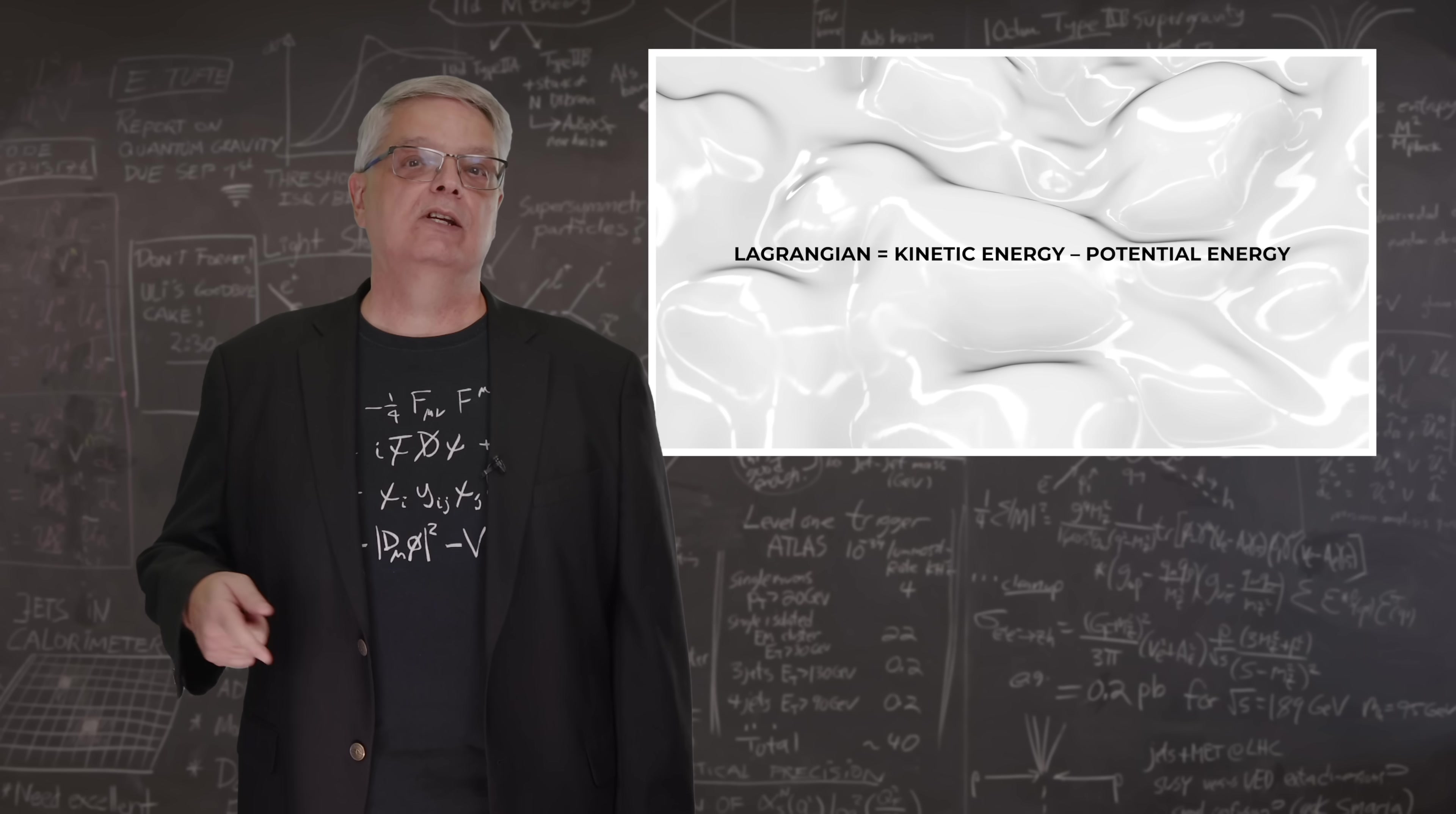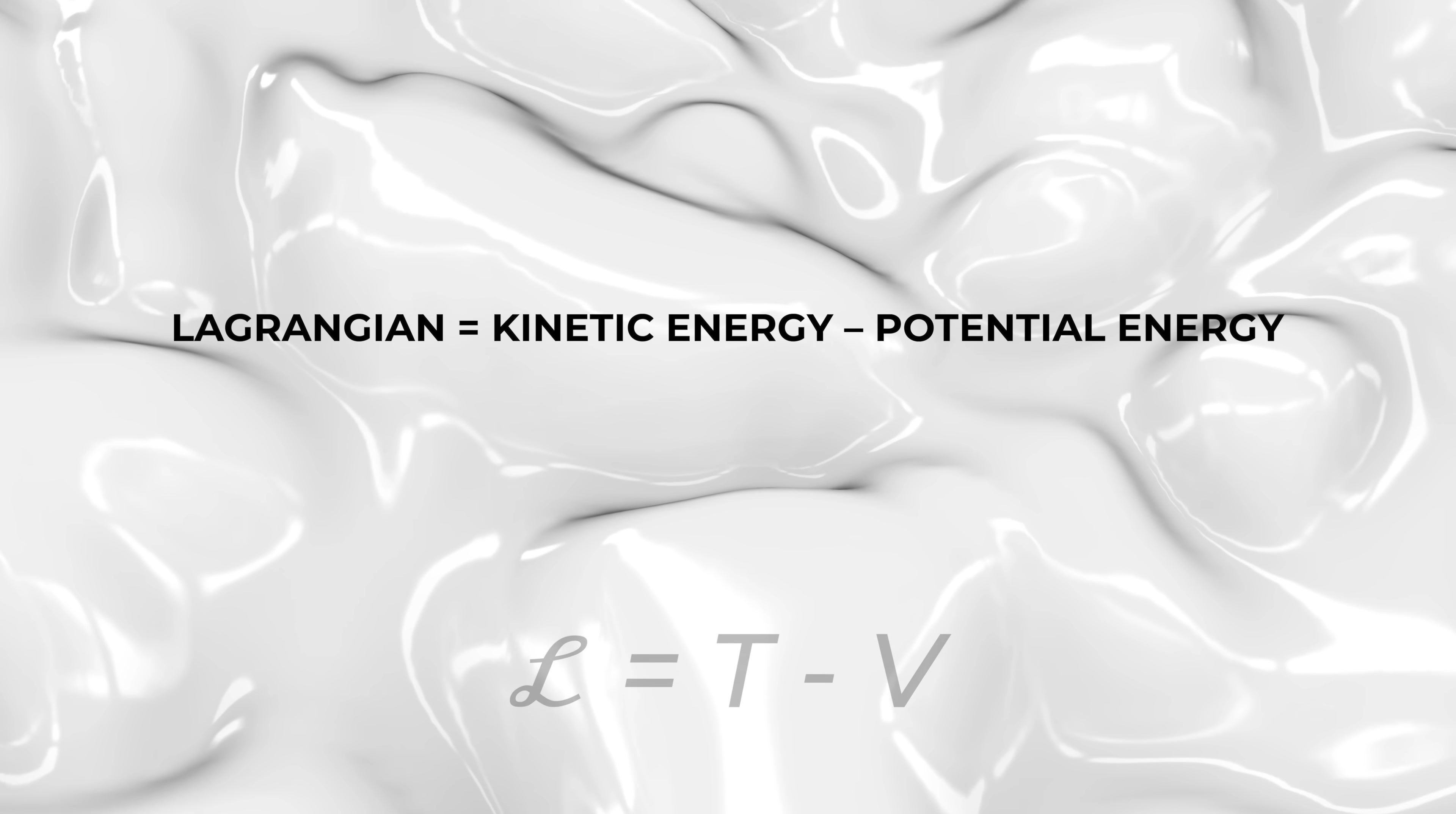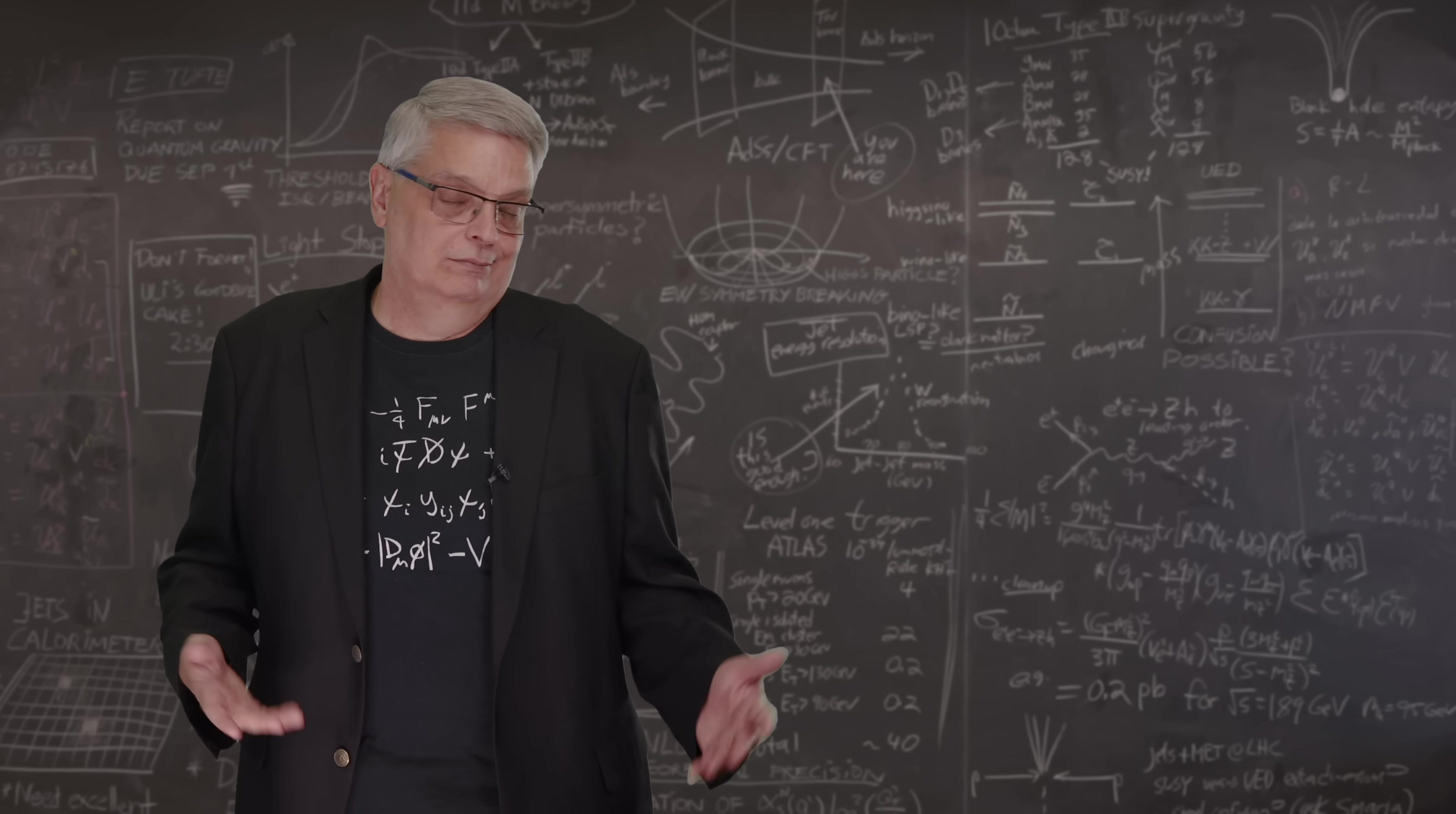And if one writes the equation in the most common way, using accepted symbols, one gets L equals T minus V. T stands for kinetic energy and V represents potential. Bizarre choice of symbols, I know, but what are you to do?